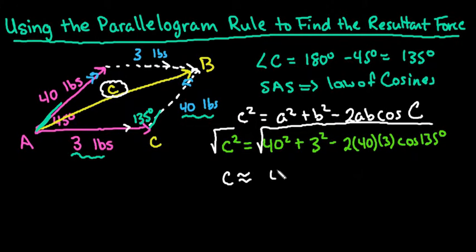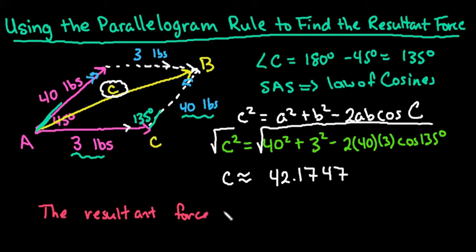So C is approximately 42.17. If we round to the nearest pound, the resultant force is approximately 42 pounds.